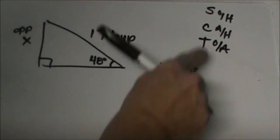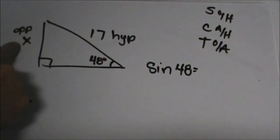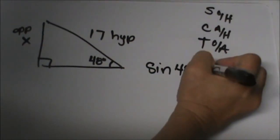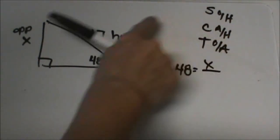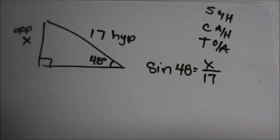And that is equal to the opposite. So my opposite is my unknown. So it is on top and my hypotenuse is on the bottom and the hypotenuse is 17. So the first problem is going to be the sine of 48 is equal to x over 17. Okay?